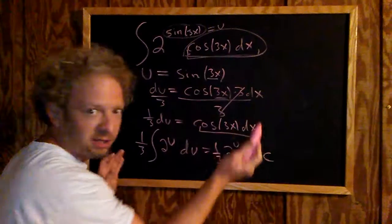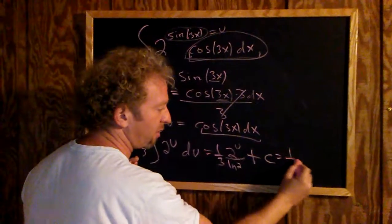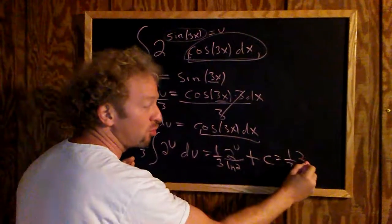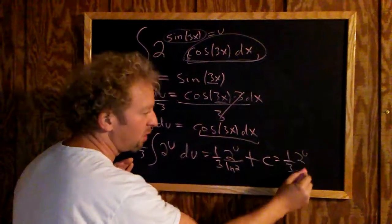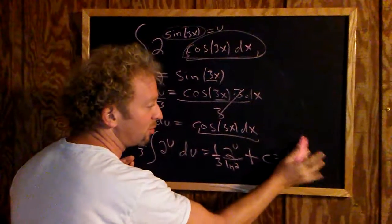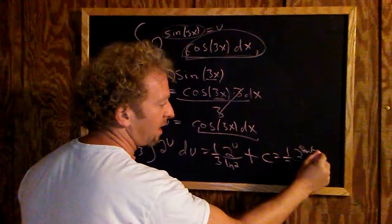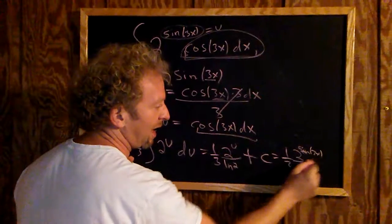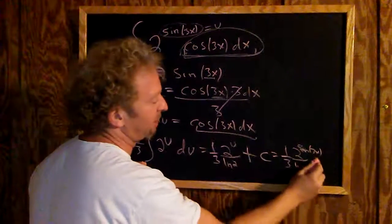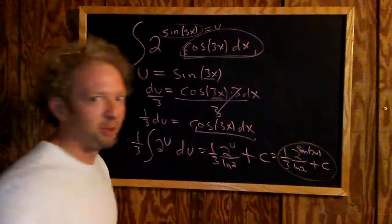To finish, just plug in u. So this is 1/3 times 2 to the u, and u is sine of 3x, over the natural log of 2. And don't forget plus C. That's it.